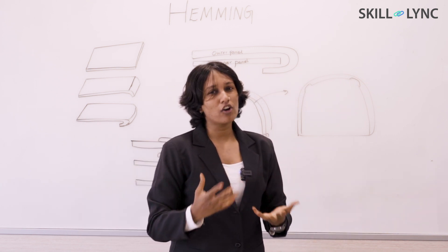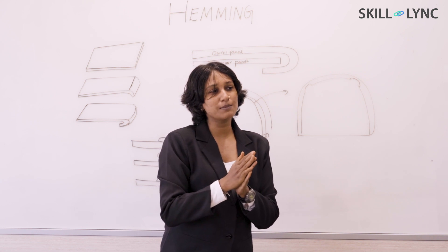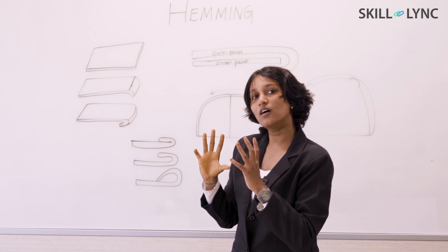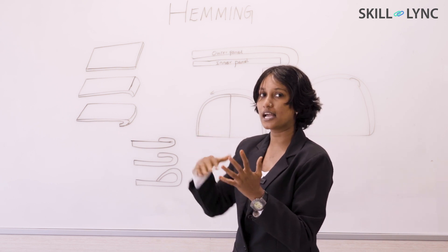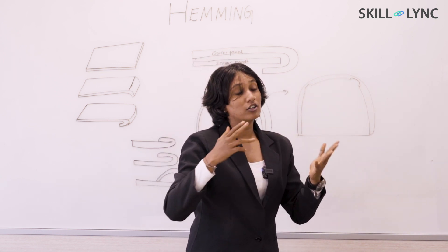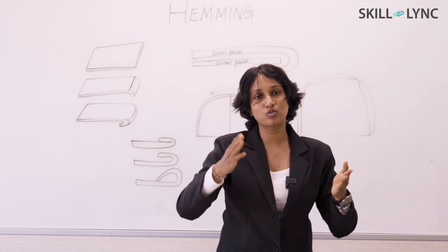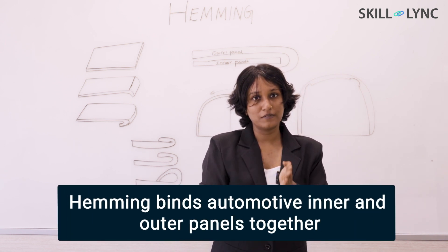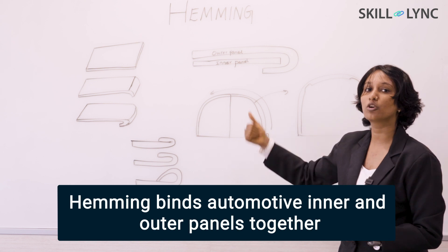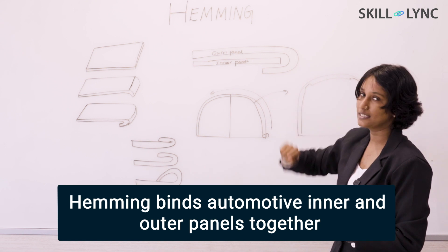In automotive sheet metal design, say for example designing a car's bonnet — the car's bonnet is not just what you see on the outside. If you open your car bonnet and see inside, the shape you see is not exactly what you see on the outside; that outer shape is the outer panel, and whatever you see inside is the inner panel. Not only the hood (bonnet) but also the car's back door and car's door have two panels attached together using a hemming operation.